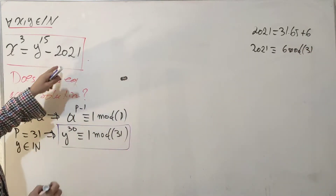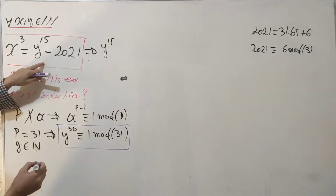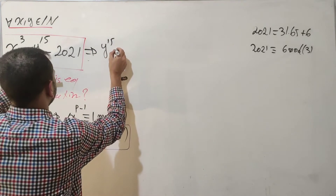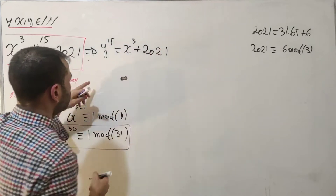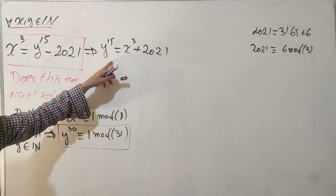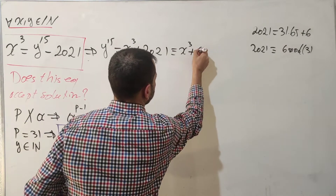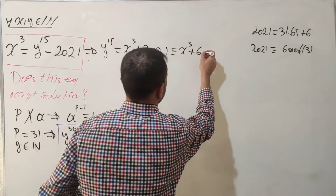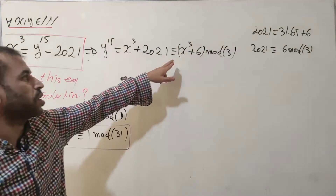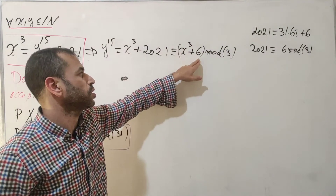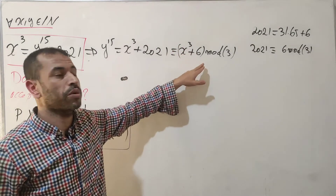Applying this to the equation, we write y¹⁵ = x³ + 2021. Reducing mod 31 gives y¹⁵ ≡ x³ + 6 mod 31. But we don't yet know what the possible remainders for x³ are when reduced mod 31.